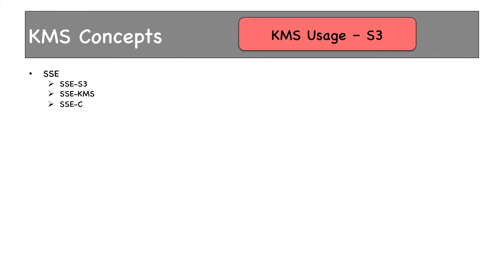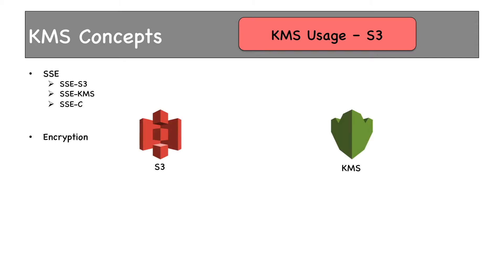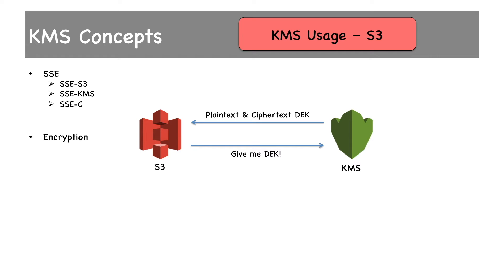AWS will not provide any CMK or KMS key for SSE-C. For the encryption process: S3 sends a request to KMS asking for a plaintext data key or DEK, saying it needs a DEK for encryption operations on its objects. KMS creates a DEK, encrypts it using the CMK we provide — in our case, AWS-foundation-kms-key — and returns both the plaintext and ciphertext DEK. S3 then encrypts all its data using the plaintext DEK. Once encryption is done, the plaintext DEK is removed from memory and the ciphertext DEK is stored along with S3's metadata.